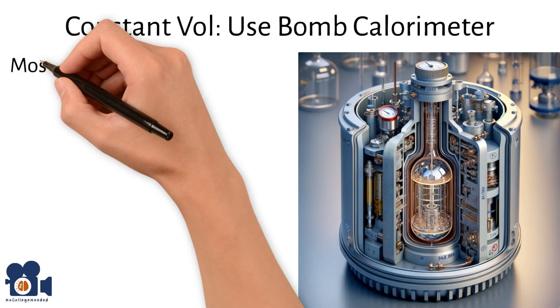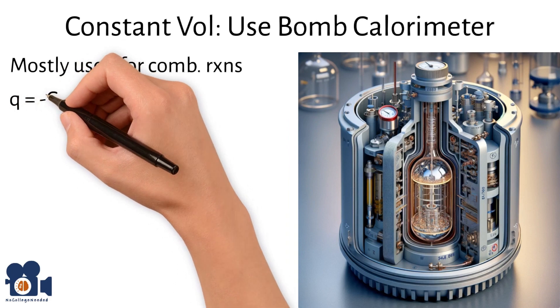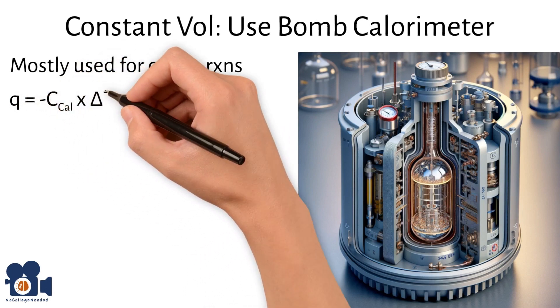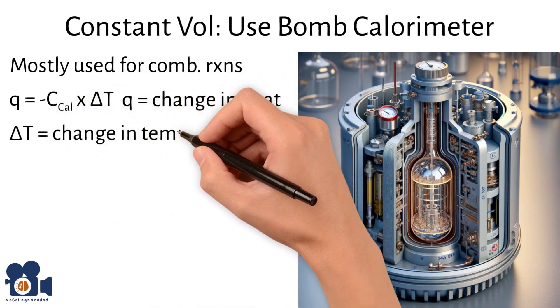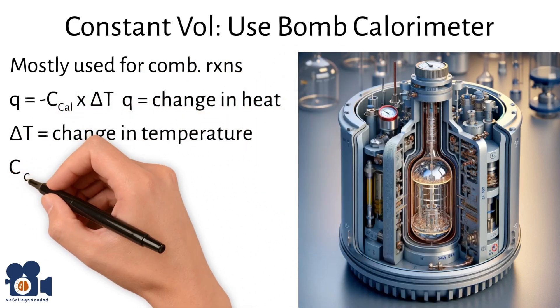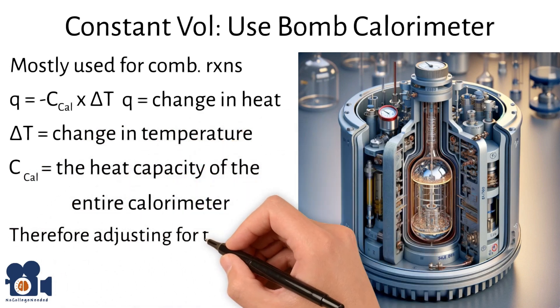Bomb calorimetry is most often used for combustion reactions, and the water still absorbs the heat and is measured to calculate the change in heat. The formula for bomb calorimetry is Q equals negative Ccal times delta T, where Q equals the change in heat, delta T equals the change in temperature, and Ccal is the heat capacity of the entire calorimeter, therefore adjusting for the mass.